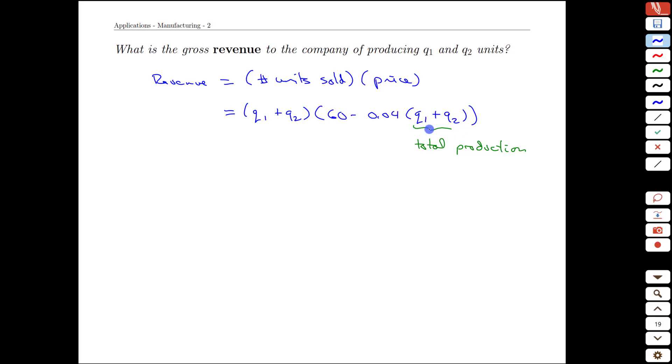As we're going to be optimizing this later it makes sense to expand this out into terms that will be easier to differentiate. So we can expand this out and get 60 q1s plus 60 q2s minus 0.04. Let's multiply this out in stages. We'll have q1 times q1 plus q2 and we'll have another negative 0.04 q2 multiplied in there, q1 plus q2.